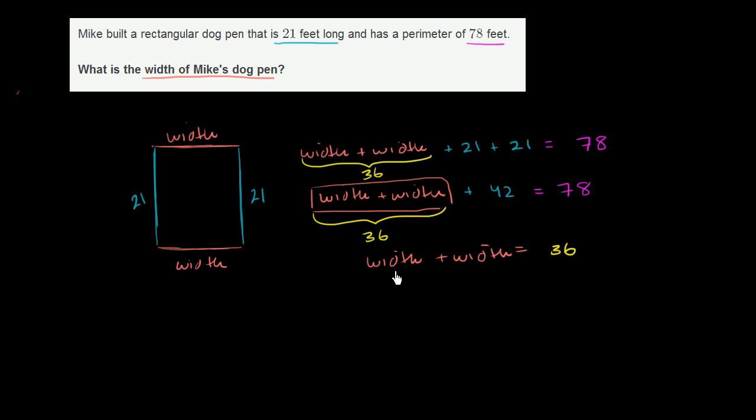So what number plus itself is going to be equal to 36? Another way to rewrite this is a number plus itself is the same thing as two times that number. So two times the width is going to be equal to 36.